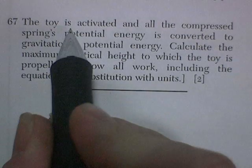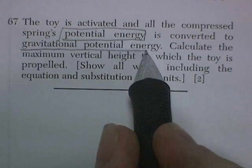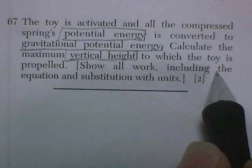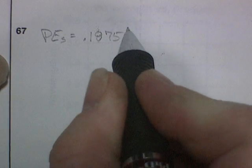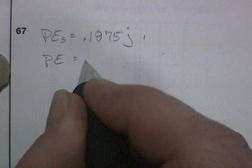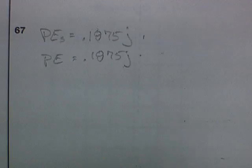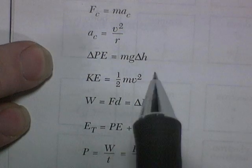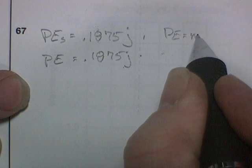Question 67. The toy is activated, and the compressed spring's potential energy is converted to gravitational potential energy. This thing jumps up in the air. Calculate the maximum vertical height to which the toy is propelled. Show all work. Include the equation and substitution with units. So the spring's potential energy was 0.1875 joules. And it's going to turn into gravitational potential energy, equal to 0.1875 joules. Now, the gravitational potential energy equation is potential energy, here we go. Change in its potential energy is mgh. Change in height. So gravitational potential energy is equal to mgh.